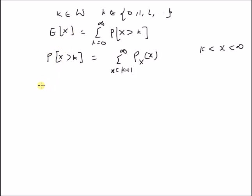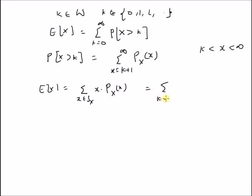Starting with the definition of the expected value — that is, E[X] is equal to summation over x belonging to the range of values of X, that is S_X, of x times the probability mass function P_X(x) — for the given random variable with range k belonging to the set of whole numbers, we can rewrite the definition as: summation k equal to 0 to infinity of k times P_X(k).